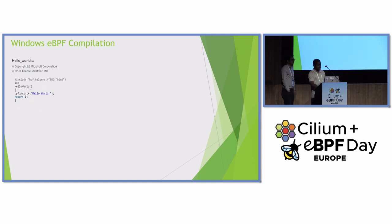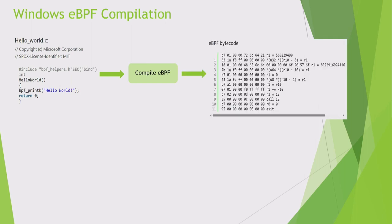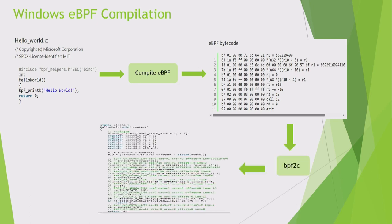Here is an example of the Windows eBPF compilation process. You have a sample eBPF program, you use the existing CLANG toolchain to compile it to bytecode, then use the BPF2C tool to convert the bytecode to driver register code, then use the MSVC compiler to convert the driver code to an executable image, get the image signed, and then load the program into the kernel.